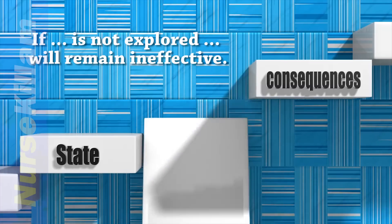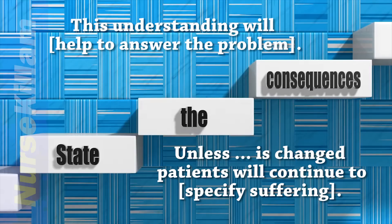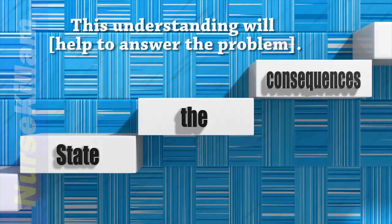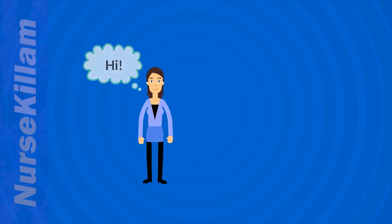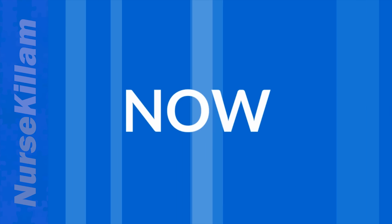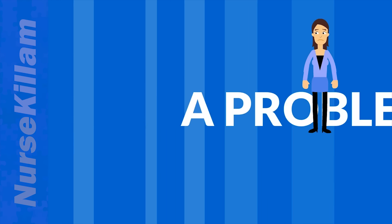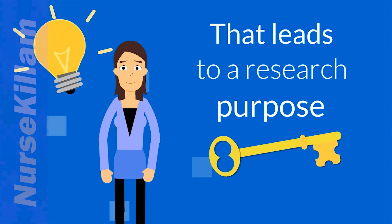If you establish the importance of the issue for your audience, your proposal will be more likely to get the attention of other researchers, key stakeholders, or funding agencies. By clearly articulating your problem, the reader will have a clear understanding of why your study is needed. The next logical thing to do is present your research purpose.